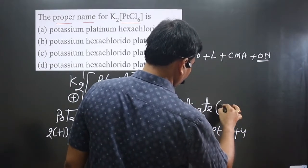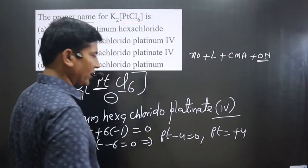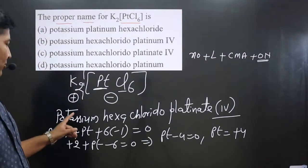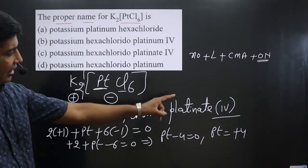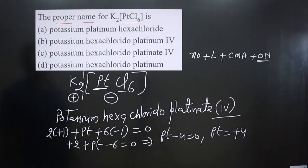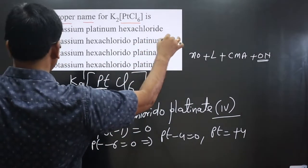Then we get platinum is equal to +4 oxidation number. So we write in Roman numerals. What is the name we got? Potassium hexachlorido platinate(IV). Any option given here? Platinate(IV) - this appears in two options.